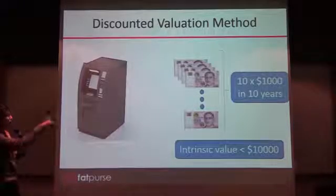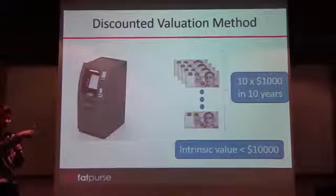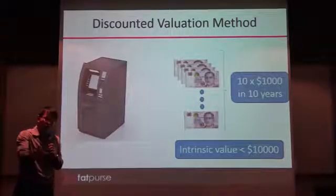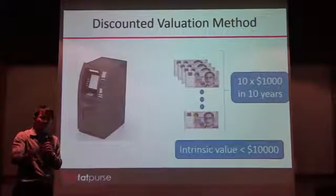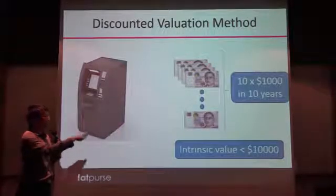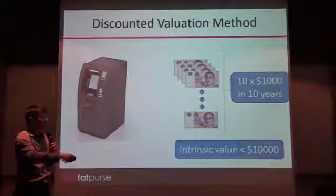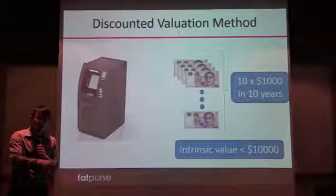So you can actually think of this as a company. The cash machine is the company. And the cash that they give to you is the dividend or the earning or the cash flow. So you discount the future earning to the current value, which is the intrinsic value.